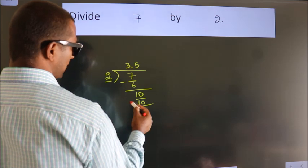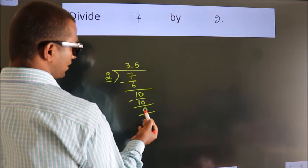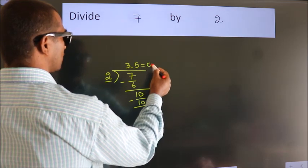Now we subtract. We get 0. We got remainder 0. So this is our quotient.